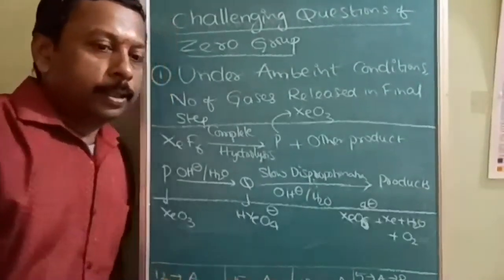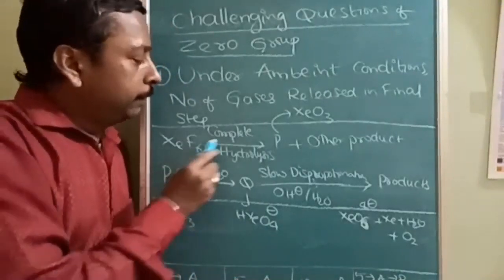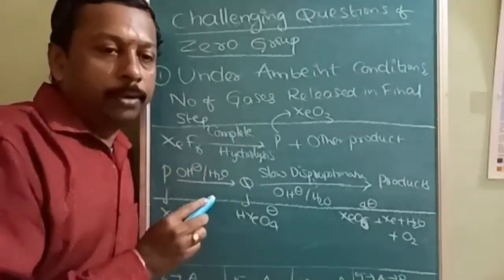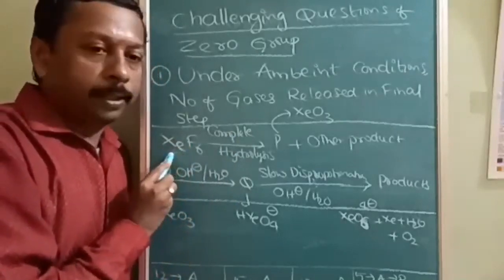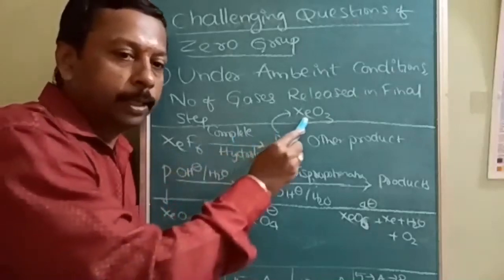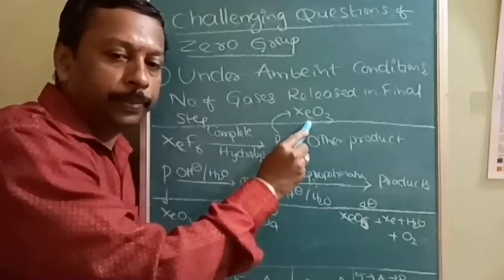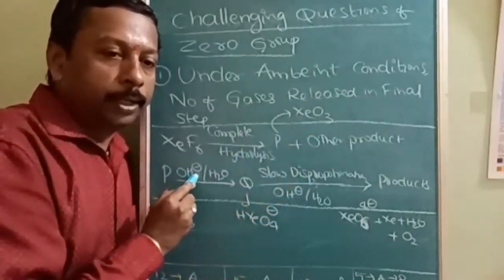See, this is the complete reaction. This is called a sequential reaction. When XeF6 undergoes complete hydrolysis, normally during hydrolysis the technique is oxidation numbers remain same. Here plus 6 is there, so plus 6 on complete hydrolysis it is converted to XeO3. So XeO3 with OH negative...